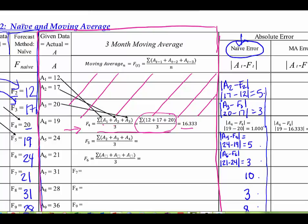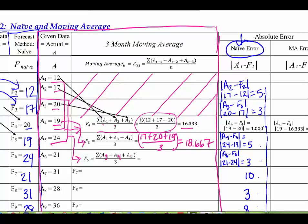We do the same thing for F5 — we take A2, A3, A4. So that's 17 plus 20 plus 19 divided by 3, which gives us 18.667. And then in the next period we do the same thing but shift it down by one, using A3, A4, and A5. So that's 20 plus 19 plus 24 divided by 3, which gives us 21. So you get the idea.